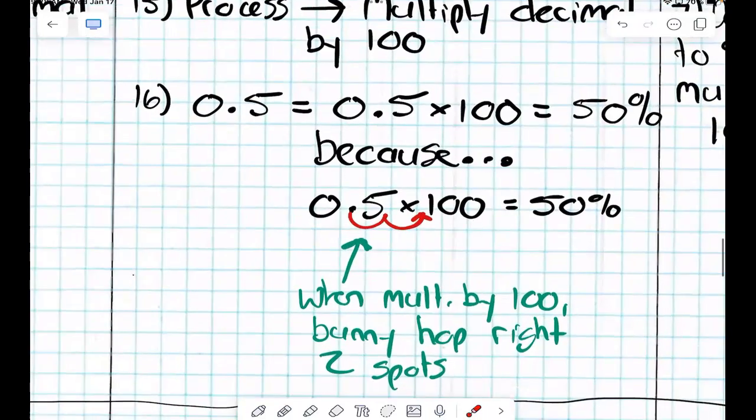Two bunny hops to the? Again, two bunny hops to the right, right? When you multiply, you go to the? When you divide by a power of 10, your bunny hops are to the? We good? Good.